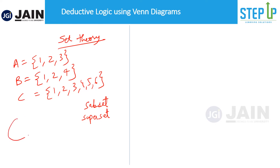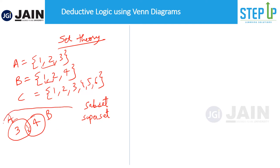If I were to represent these sets A, B, and C in a diagrammatic fashion, that is nothing but your Venn diagrams. So A and B overlap where one and two are common elements; B alone has four, and A alone has three. For C, it acts as the superset because C contains all the elements of A and B — one, two, three, four — plus the additional elements five and six.